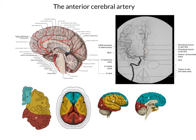How does it distribute itself to these structures close to the midline? The anterior cerebral artery originates here, loops back over the corpus callosum, and runs all over the superior surface of the corpus callosum. It sends multiple branches up to the medial aspect of the cerebral hemispheres, mostly the frontal and parietal lobes.